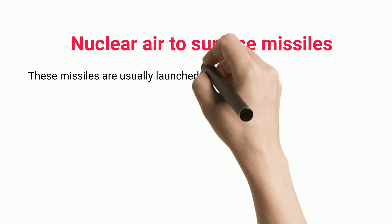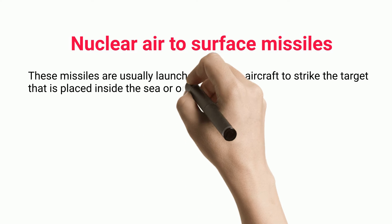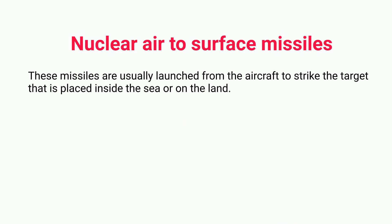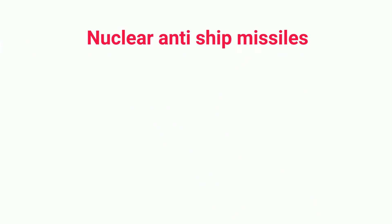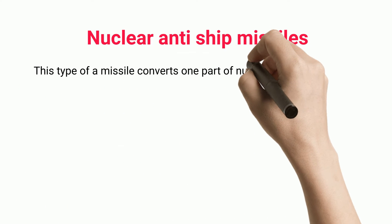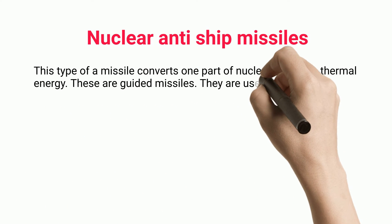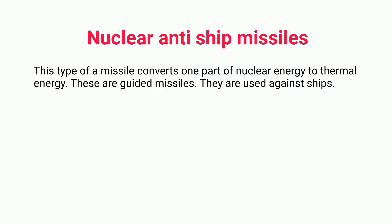Nuclear air-to-surface missiles are usually launched from aircraft to strike a target placed inside the sea or on the land. Nuclear anti-ship missiles convert one part of nuclear energy to thermal energy. These are guided missiles used against ships.